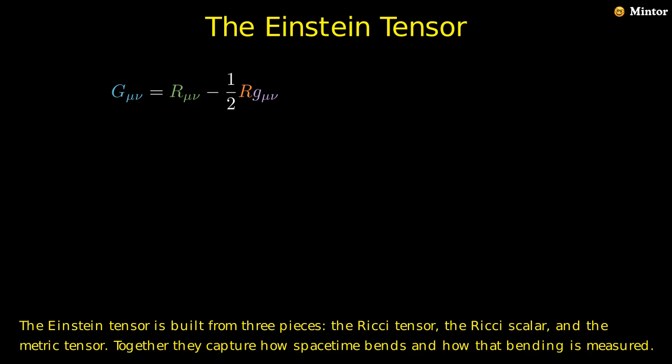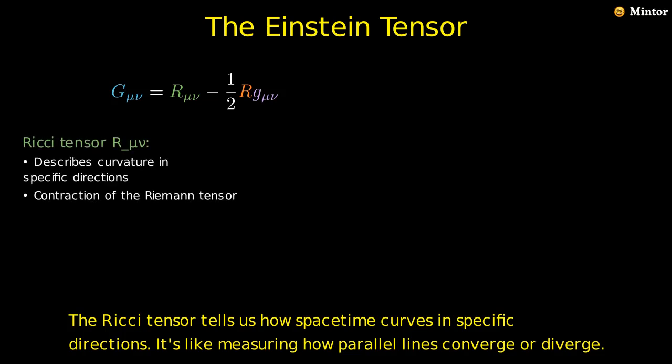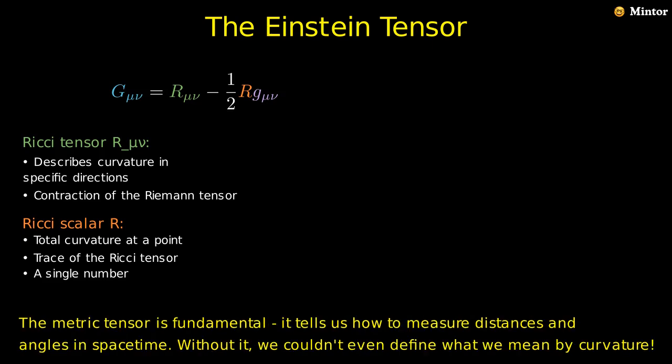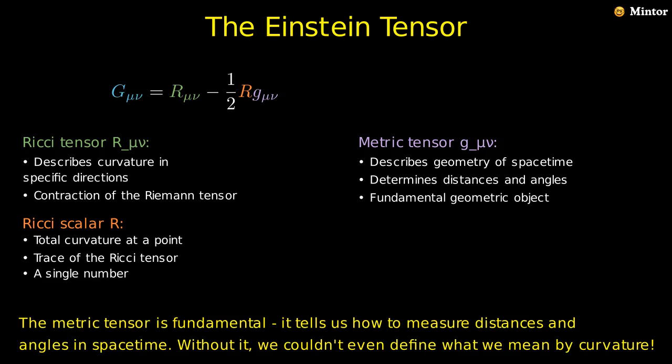Together they capture how spacetime bends and how that bending is measured. The Ricci tensor tells us how spacetime curves in specific directions. It's like measuring how parallel lines converge or diverge. The Ricci scalar gives us the total amount of curvature at a point. It's a single number that summarizes the overall curvature. The metric tensor is fundamental. It tells us how to measure distances and angles in spacetime. Without it, we couldn't even define what we mean by curvature.